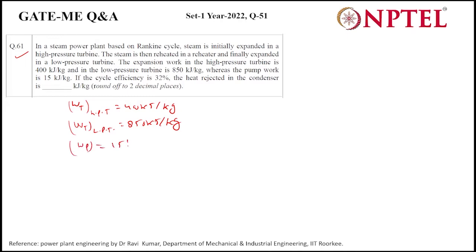Whereas the pump work is 15 kilojoules per kg and the cycle efficiency is 0.32. Then the heat rejected in the condenser, we have to find.